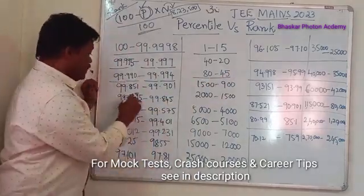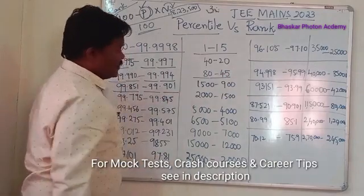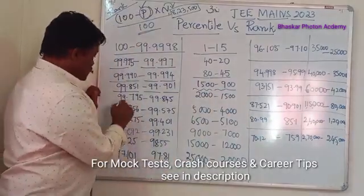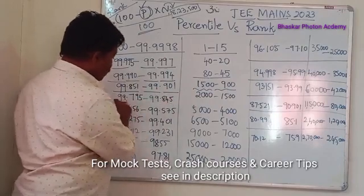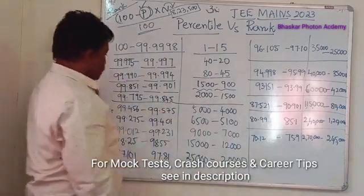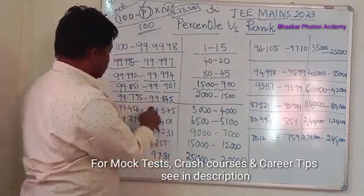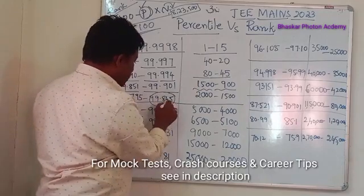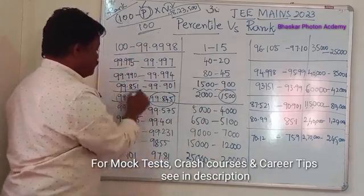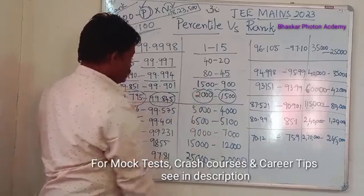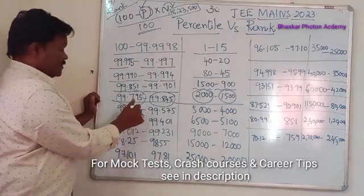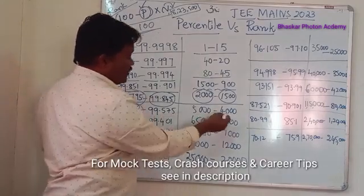For the percentile range 99.851 to 99.901, ranks were around 900 to 1500. For 99.795 to 99.845, ranks are in the range of 1500 to 2000. Note that 99.845 is a higher score so the rank is around 1500, whereas 99.795 gives a rank around 2000. For percentile 99.575 to 99.456, ranks are approximately 4000 to 5000.